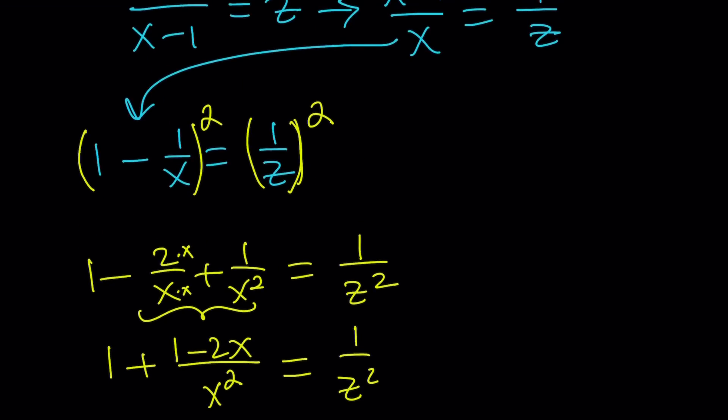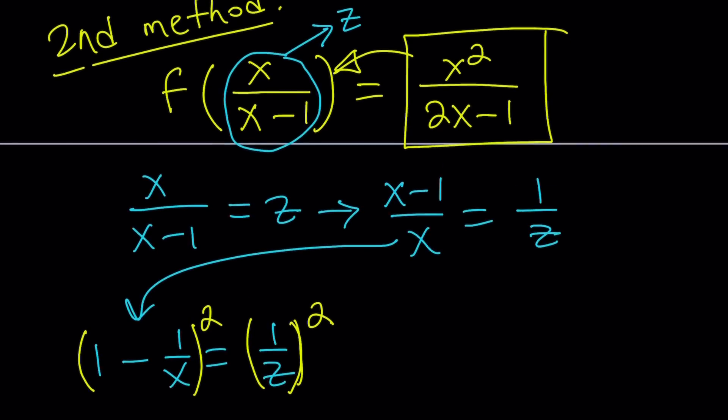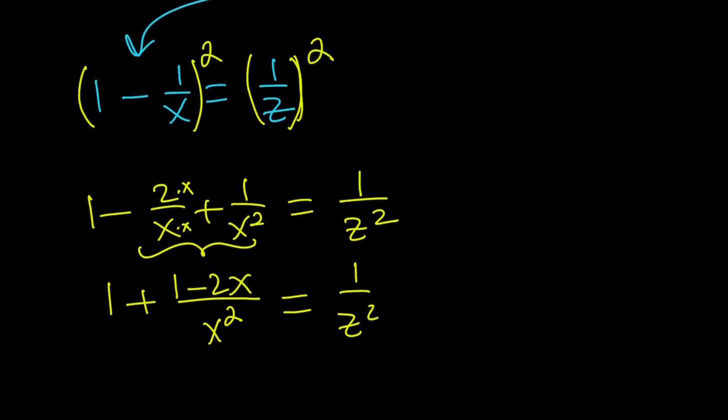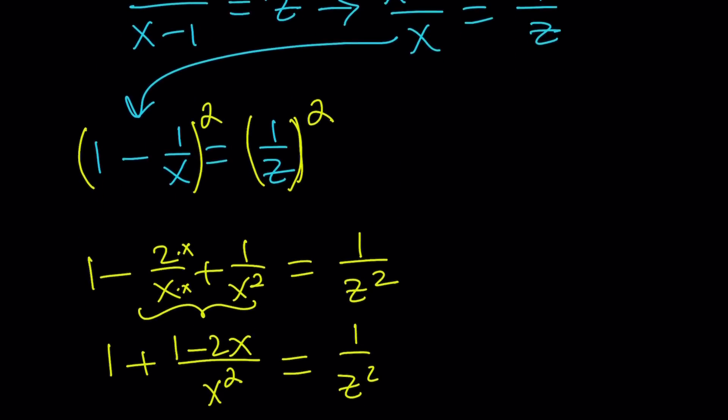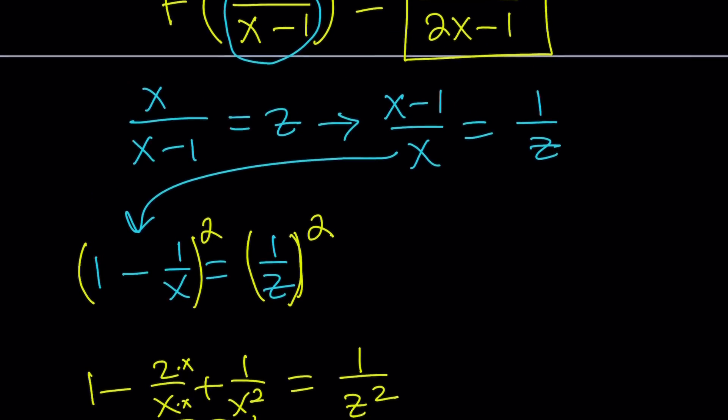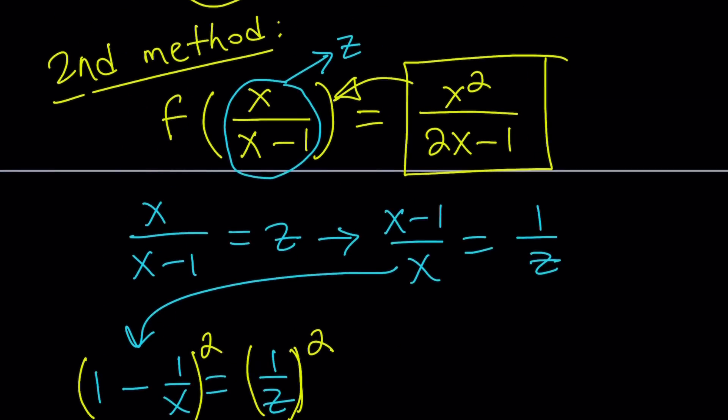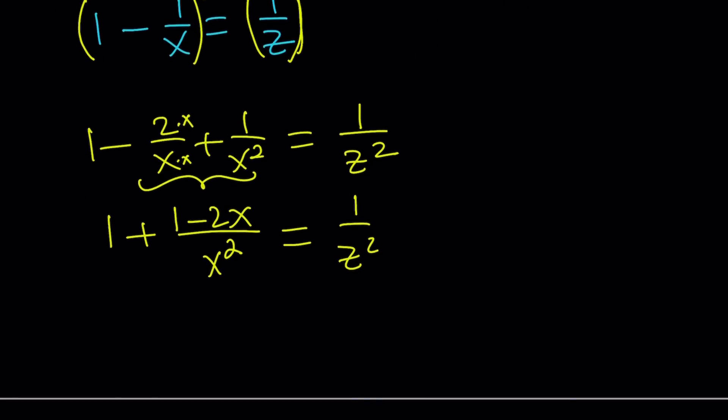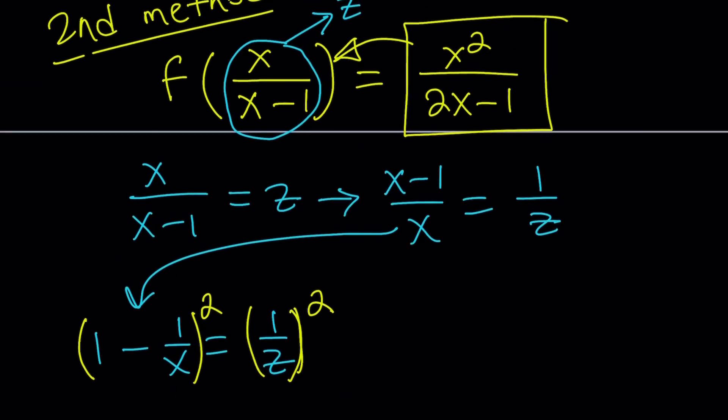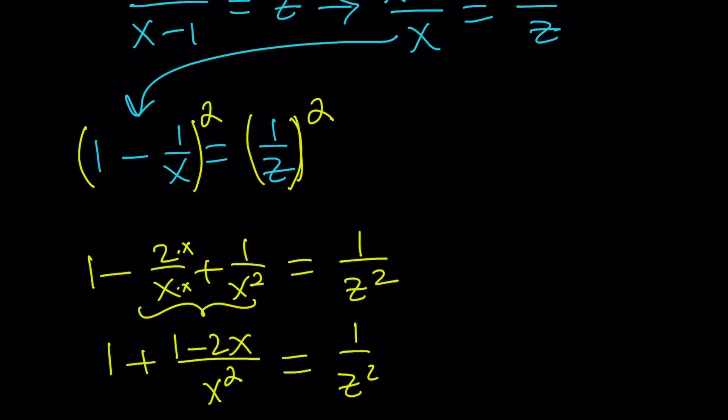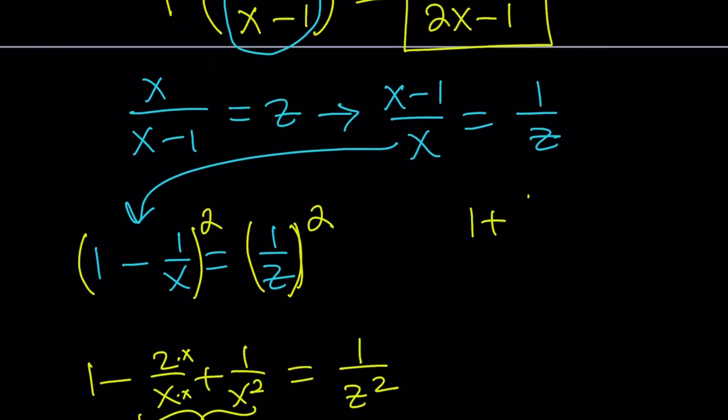Now, look at this expression. I hope this makes sense now. 1 minus 2x over x squared plus 1. And we have x squared over 2x minus 1. If you see what I see, let me know. But you should be able to see that these expressions are very similar. Look at this. We have an x squared at the bottom. We have an x squared on top. We have 1 minus 2x. And we have a 2x minus 1. Notice that 1 minus... And let me copy that here because I keep going back and forth.